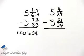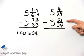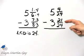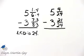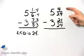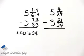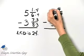And now we are subtracting, we have another problem. Can you see what that problem is? I can't take 21 over 24 from 4 over 24, so I'm going to need to borrow.